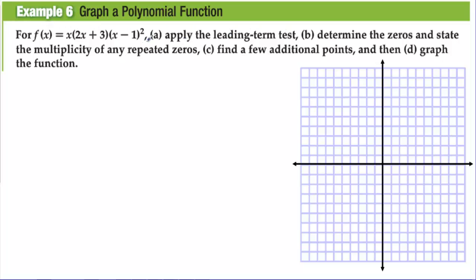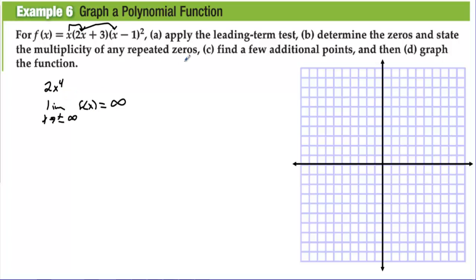Applying the leading term test: if we multiply out the function, we get x² times x² giving x⁴, so the leading term is 2x⁴. Therefore the limit as x → ±∞ of f(x) is positive infinity — the function goes up on both ends — because we have an even degree with a positive coefficient.